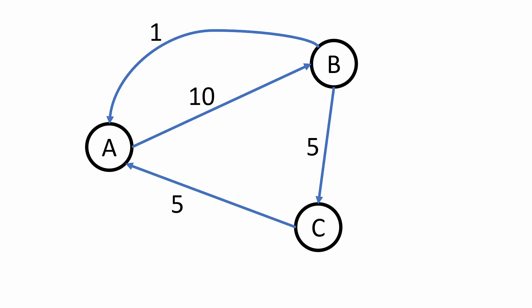Let's formalize the logic. A pays 10 rupees to B but also gets 1 rupee from B and 5 rupees from C — total 6 rupees received, 10 paid out — giving A a score of negative 4. B gets 10 from A, pays out 1 and 5, so B's score is plus 4. C gets 5 rupees and pays out 5 rupees, giving it a score of 0.